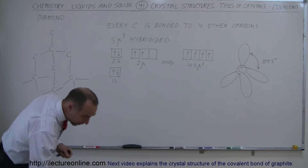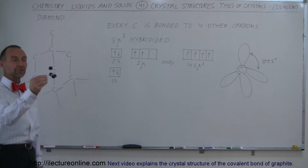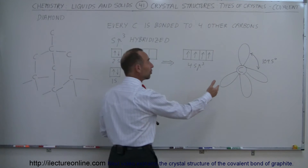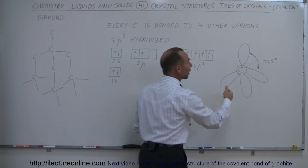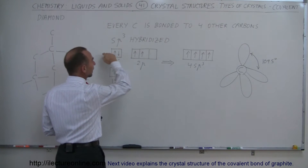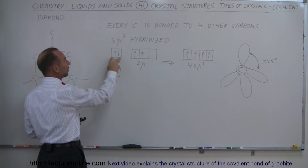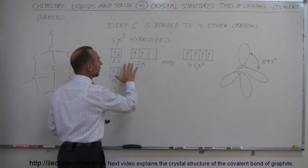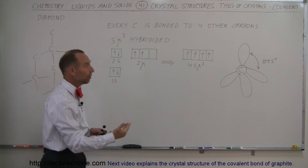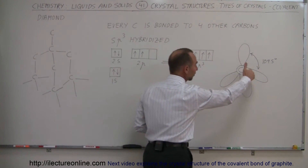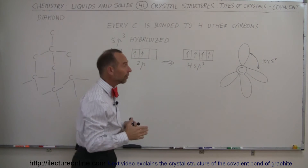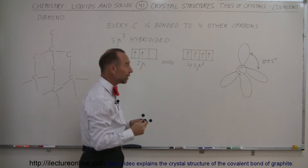If you remember, a diamond forms a nice tetrahedral shape like this — I have something drawn on the board. The reason for it is the hybridization of the four electrons that are able to be hybridized. We have the outermost layer of electrons, the valence band: two in the 2S shell and two in the 2P shell. They get hybridized into an SP3 shape, allowing electrons to set up an arrangement where they're all exactly at the same distance from one another, at an angle of 109.5 degrees.